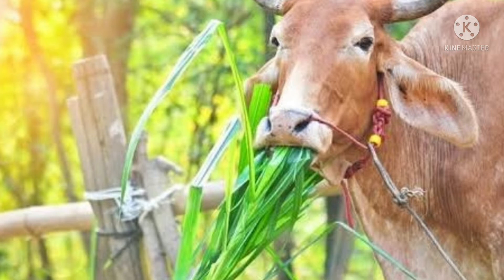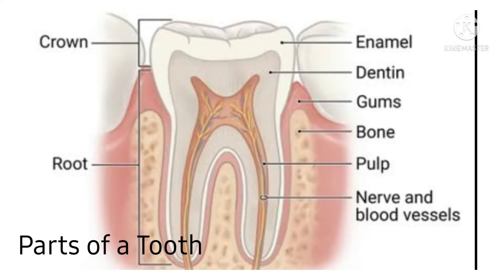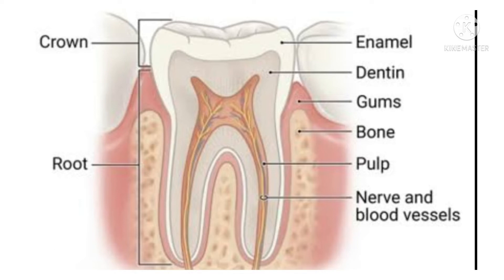A tooth has a crown and a root. The crown is the part we see, whereas the root is the part inside the gums. Gums hold the teeth in their places. The white part on the outside of a tooth is called the enamel. It is the hardest substance in the human body.